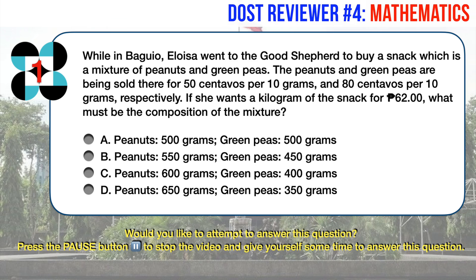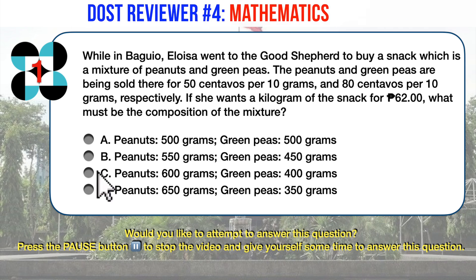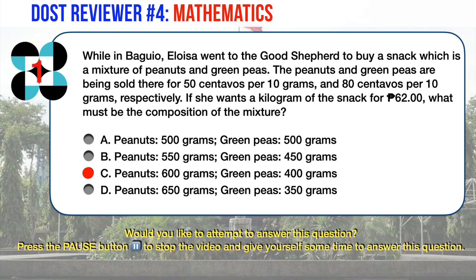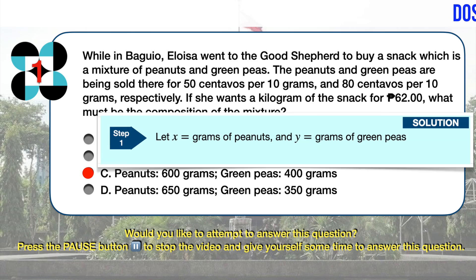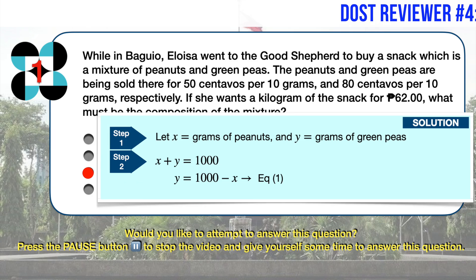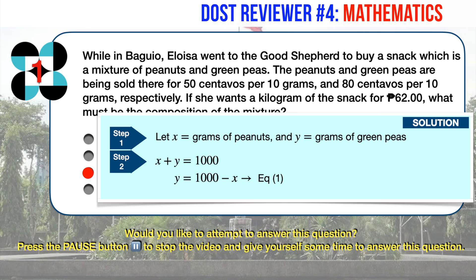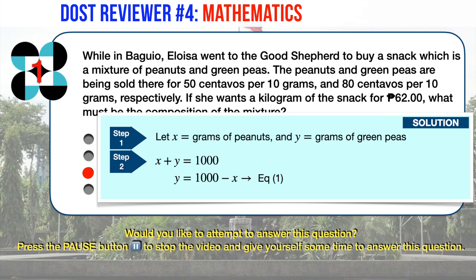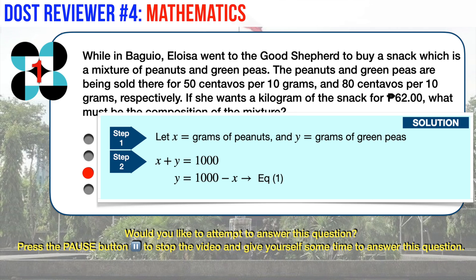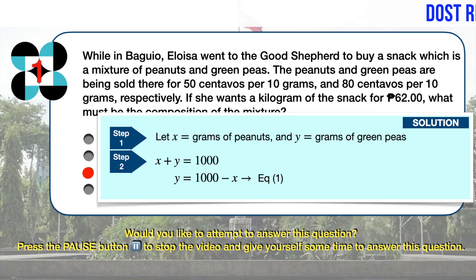The correct answer is C: peanuts 600 grams, green peas 400 grams. Let X equal grams of peanuts and Y equal grams of green peas. Grams of peanuts plus grams of green peas equal 1 kilogram or 1000 grams. We can express this as X plus Y equals 1000. Expressed in terms of Y, we get Y equals 1000 minus X. Let's label this as equation 1.